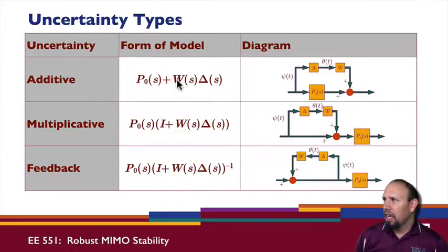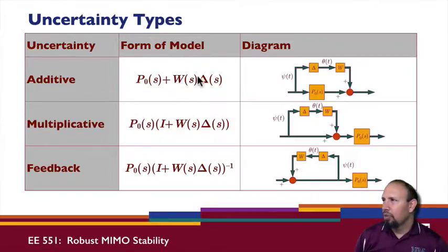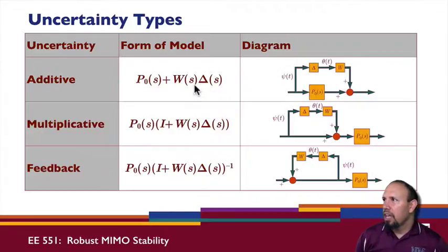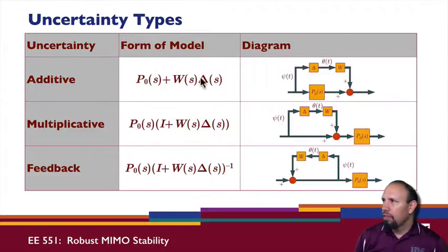W absorbs whatever gain there may be. For example, if the uncertainty is small — say 0.1 — then W can be 10, so that if you scale this by 0.1 it becomes magnitude one. We can absorb whatever scaling so that this is essentially something we know has infinity norm equal to one.